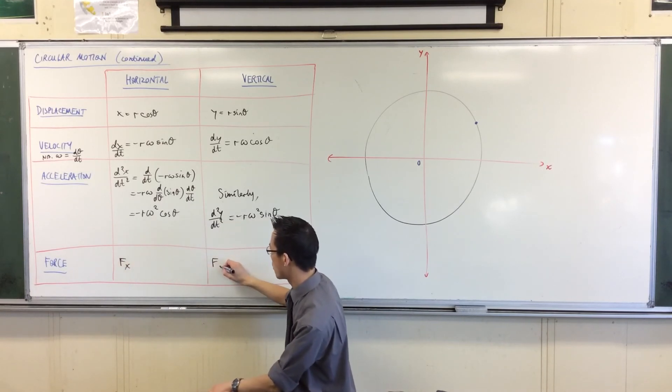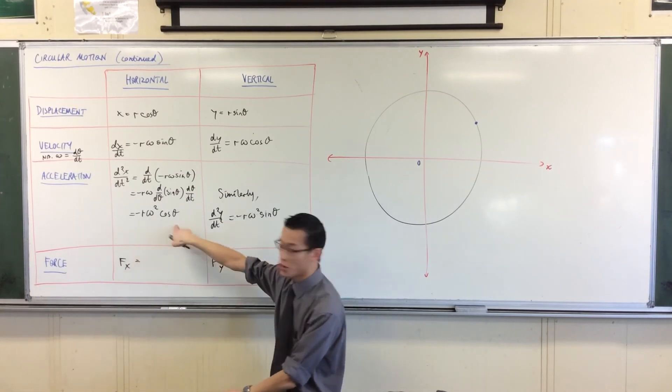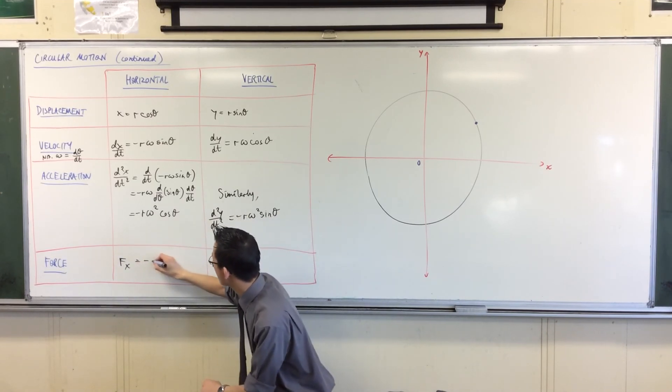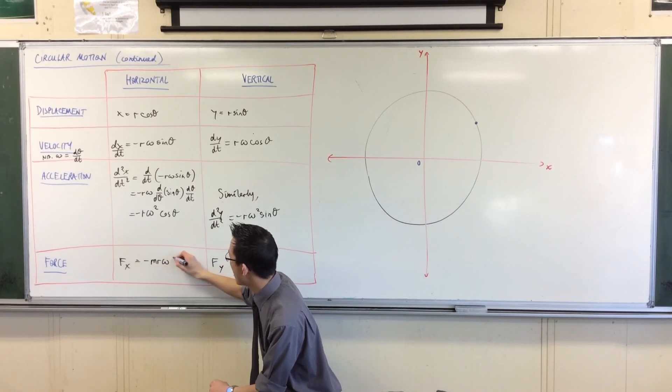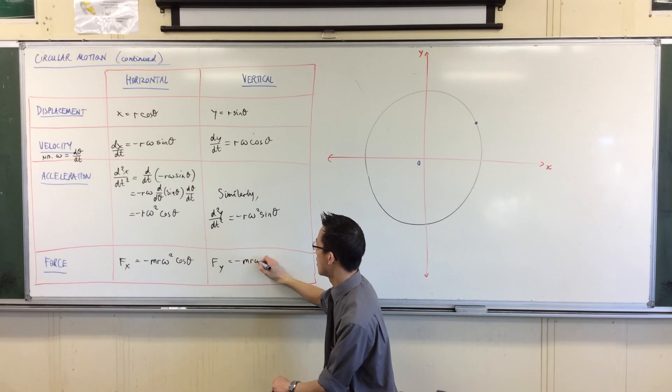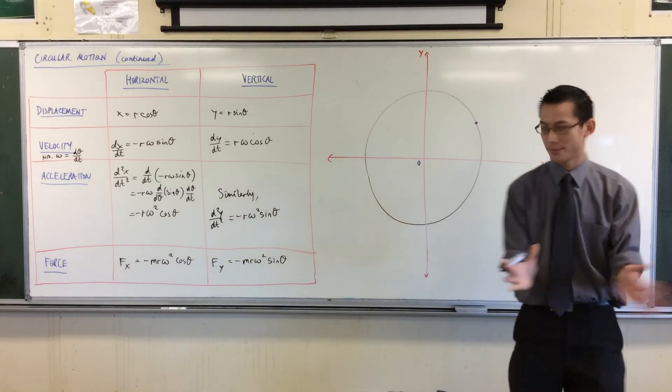So I'm going to call this the x one and the y one, just so I can distinguish, and it's just going to be this times mass. Force is mass times acceleration, right? So you're getting minus MR omega squared that, and minus MR omega squared that. Cool. This is good.